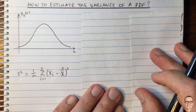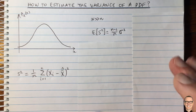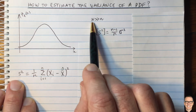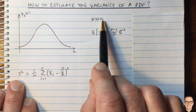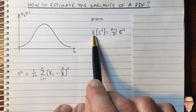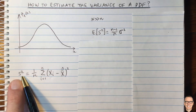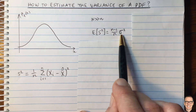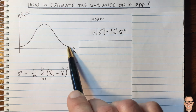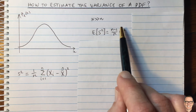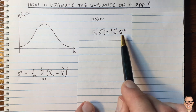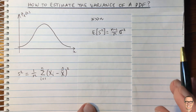Let's look at the mean first — we're going to try and find the mean of this estimate. If your overall population is much bigger than the number of samples you take, then the expected value of this estimate is given by this formula, where sigma squared is the variance of the original random variable. You can see straight away that this is a biased estimate.